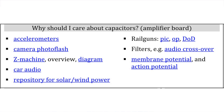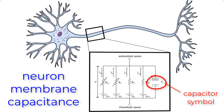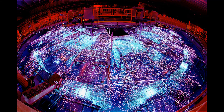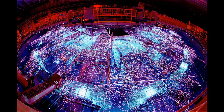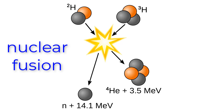The first answer is because they're everywhere and they're really important. Capacitance is really important in neurotransmitters, specifically in the neuron cell. This is the Z machine at Sandia National Laboratory. It uses several large capacitors to store a lot of electricity and then release it all at once, which creates super strong magnetic fields used for fusion research and other research applications.